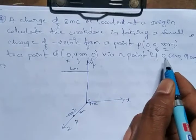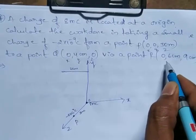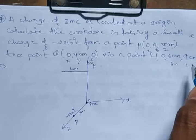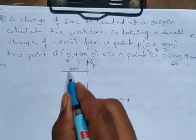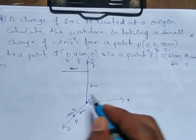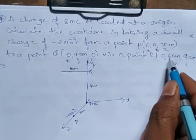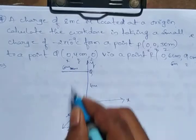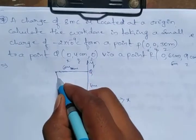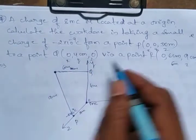Next, point R is at coordinates (0, 6, 9). Observe carefully: the y-axis is 6 cm and the z-axis is 9 cm. So point Q is at distance 4 cm, y-axis is 6 cm, and z-axis is 9 cm for point R.